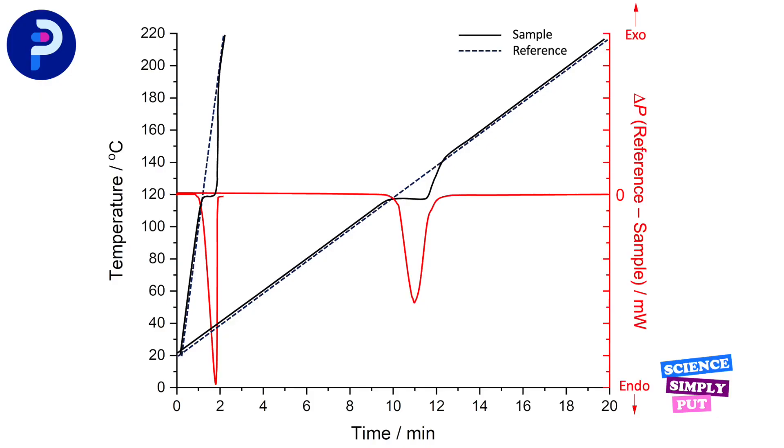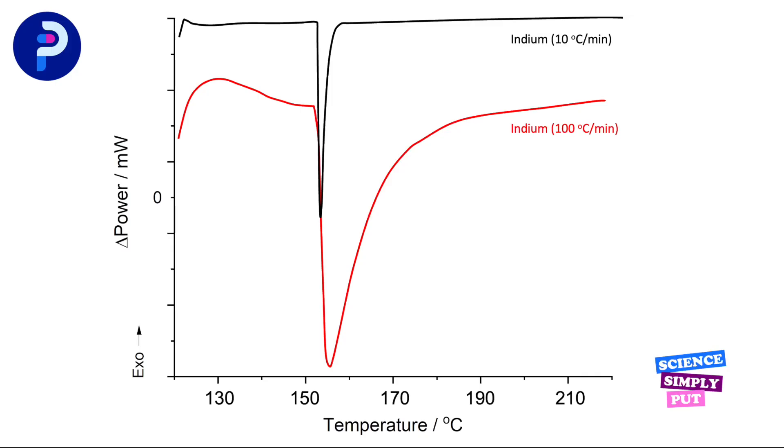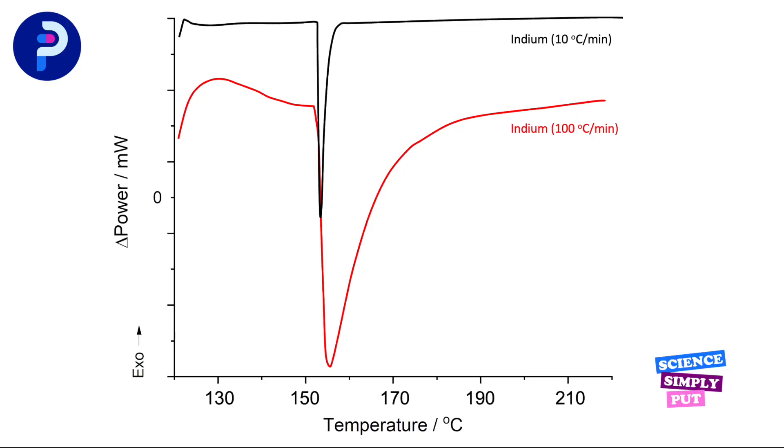We've seen already that the heating rate has a profound effect on the data produced by DSC. Faster heating rates have the effect of making peaks larger and broader, hence increasing sensitivity, while slower heating rates have the effect of making peaks smaller and narrower, hence increasing resolution. That in itself means you need to choose a heating rate carefully, such that you see all the transitions your sample might be undergoing.